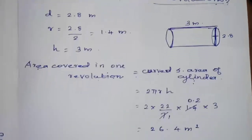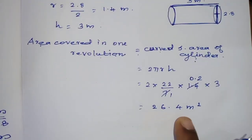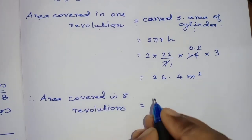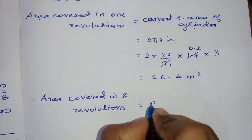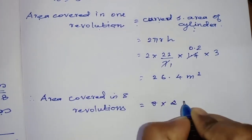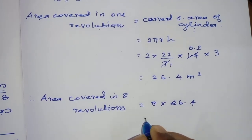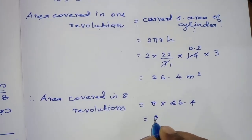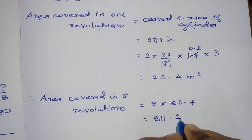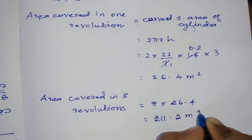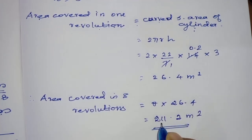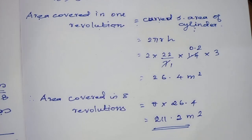Area covered in 1 revolution is 26.4 meters square. To find area covered in 8 revolutions, multiply: 26.4 into 8. The answer is 211.2 meters square.